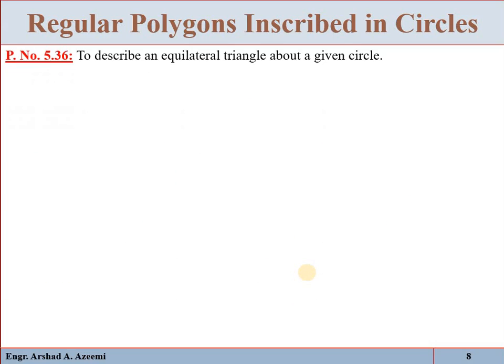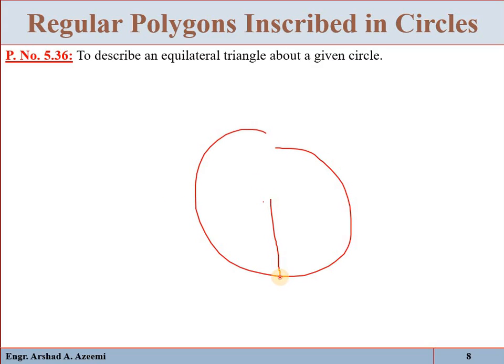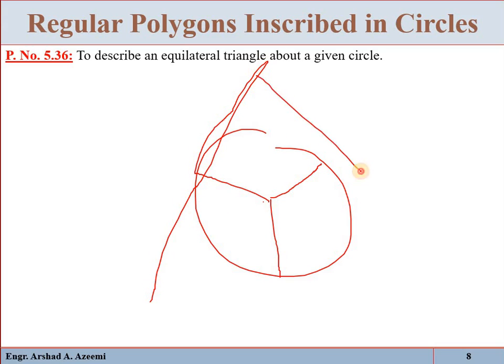To recap describing an equilateral triangle about a given circle: draw the vertical radius and at 120 degrees draw another radius, then another radius. At these three points, draw the tangent lines and extend them. At the points where they intersect each other, that will be the required described equilateral triangle.